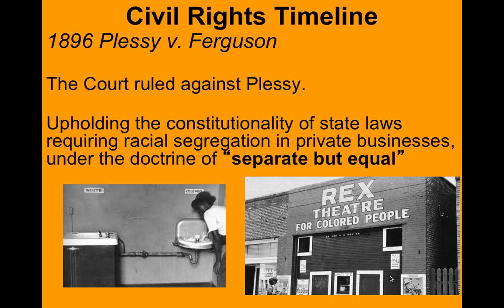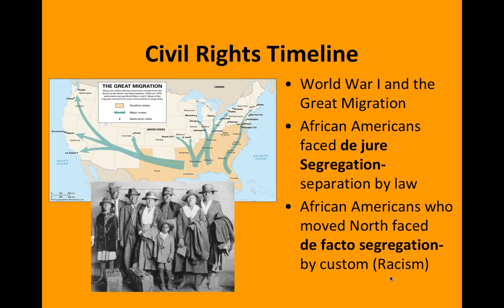These were often referred to as Jim Crow laws in the South. Then we have World War I. African Americans did fight in World War I in segregated units. However, World War I affects the country as far as civil rights in a much different way, because after World War I we're going to see African Americans migrate from the South to the North, to the Northern cities. This was known as the Great Migration, something that you covered in the 1920s.